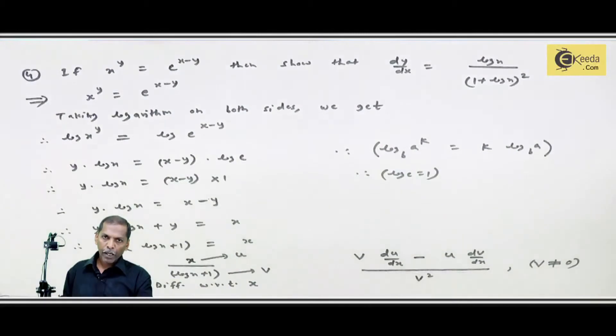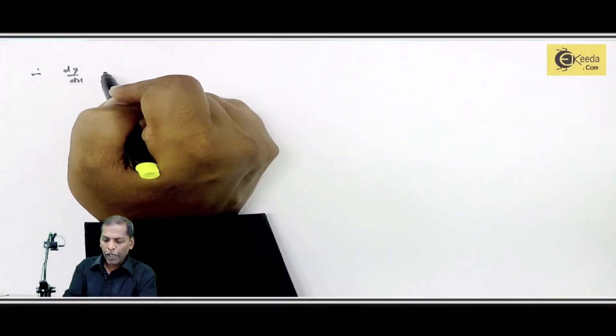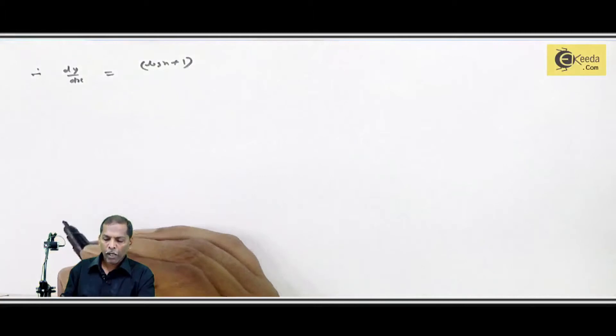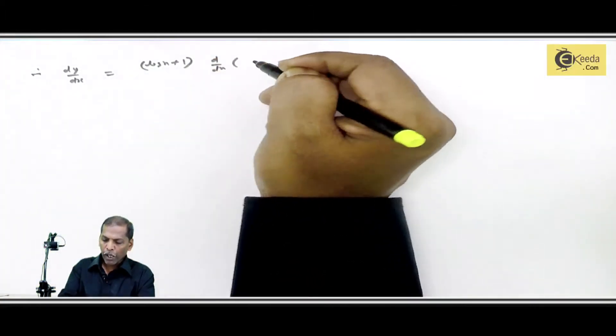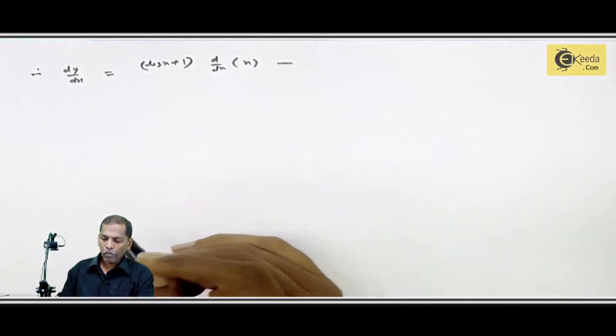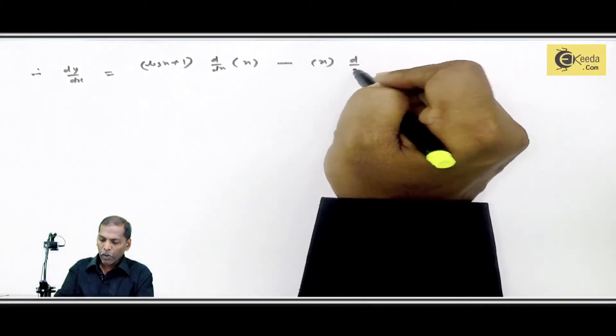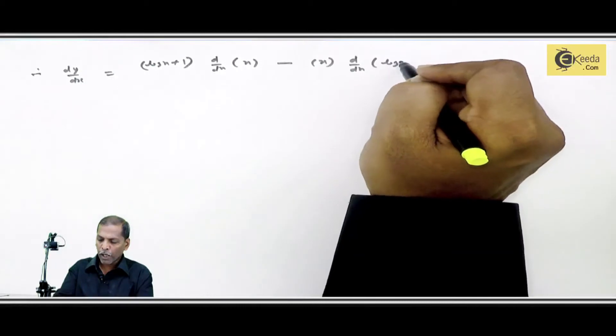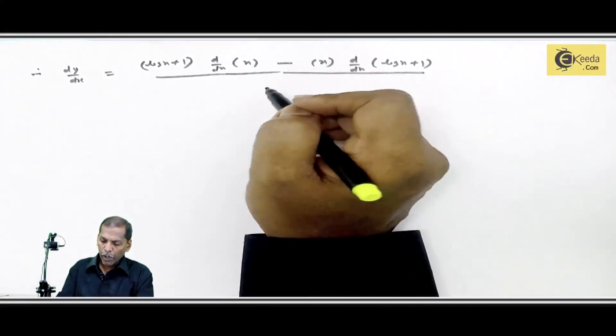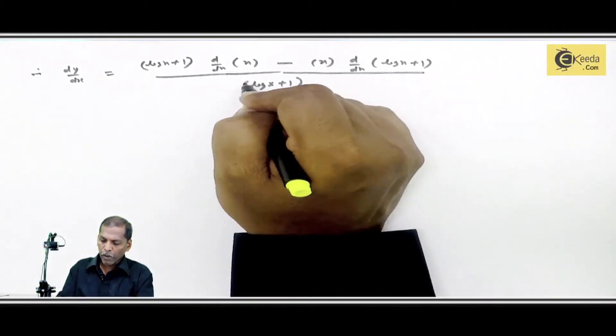In our question u is x and v is log x plus 1. If we use this formula, we get the answer. Therefore, dy by dx is equal to v same, that is log x plus 1, same. Now derivative of u, u term was x, then minus, now u same, that is x same. Now derivative of v, replace log x plus 1, upon v square. V square was log x plus 1 the bracket square.